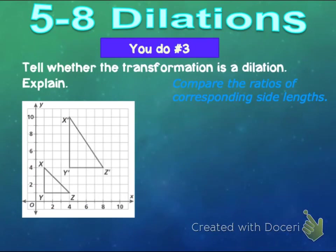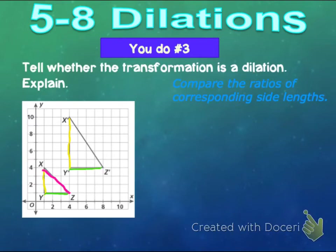Now I'm going to have you try number three. Tell whether the transformation is a dilation — remember you're going to compare the ratios of each corresponding side length. Compare this side to this side, y-to-z to y-to-z, and x-to-z to x-to-z, and see if the ratios come out equal to one another.